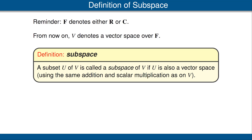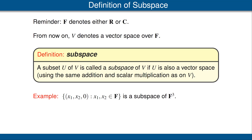The notion of subspace will lead us to a lot more examples of vector spaces. Here's the definition of subspace. A subset U of V is called a subspace of V if U is also a vector space using the same addition and scalar multiplication as on V. For example, if we let U be the set of all elements of F³ whose third coordinate is 0, that's a subspace. Using the same addition and scalar multiplication as on V, this set is a vector space in its own right, and thus it is a subspace of F³.